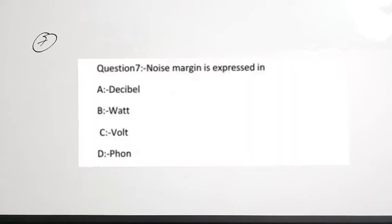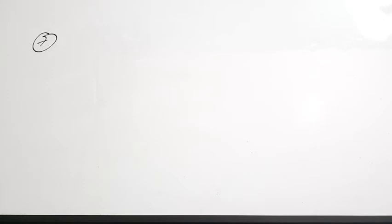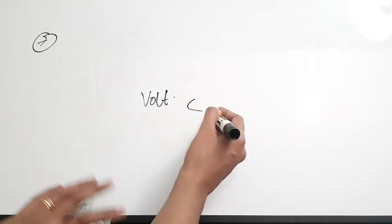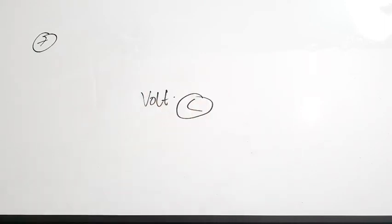The seventh question: noise margin is expressed in — decibel, watt, volt, or ohm. Noise margin is expressed in volts. Note: if the question asks about noise figure, the unit would be decibels, but noise margin is in volts. Correct answer is option C.